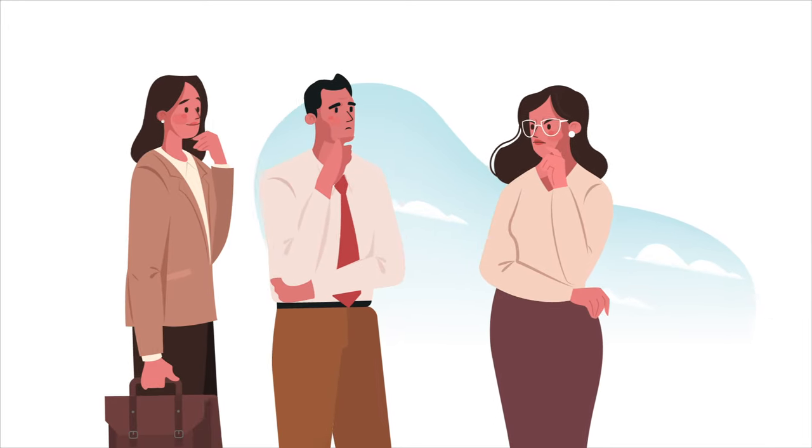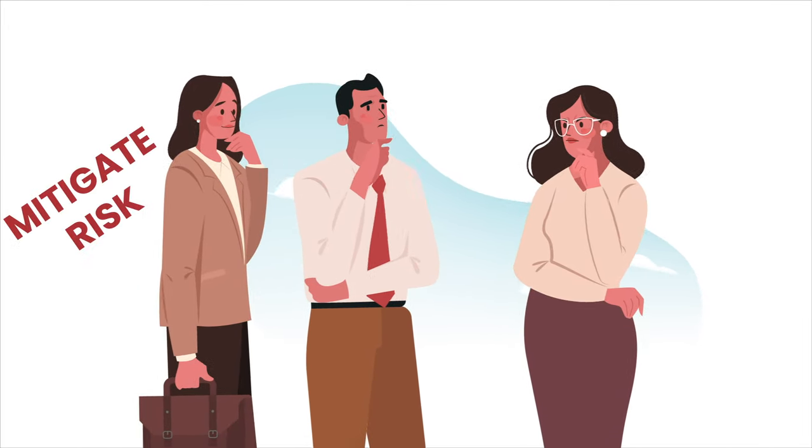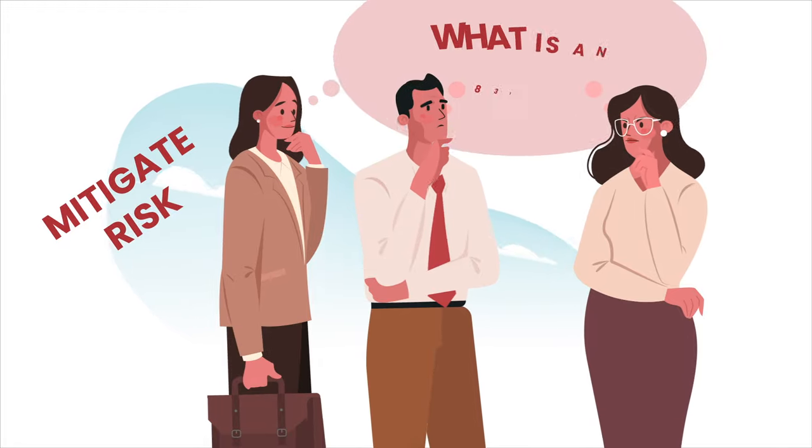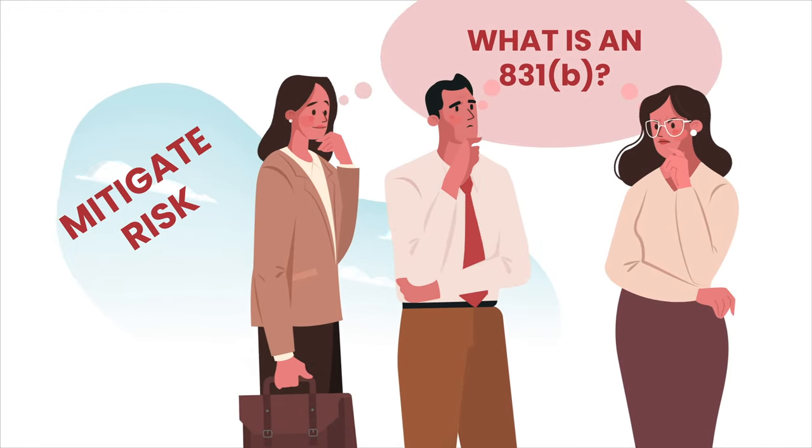Hindsight is 20-20, and the 2020 pandemic made it clear that business owners must establish an 831B plan to mitigate risk and weather all storms.